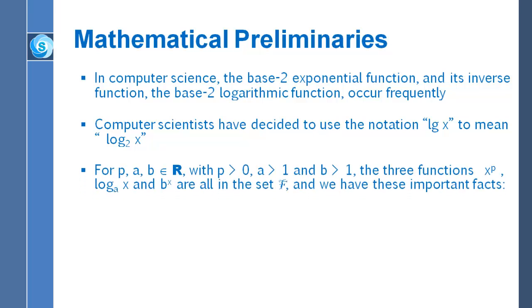Now, suppose you have real numbers P, A, and B, and P is positive, A is greater than 1, and B is greater than 1. Then, it makes sense to talk about and compare the following three functions. X to the Pth power, log to the base A of x, and B to the x power. All three of these functions are increasing, they all belong to the set script F, in fact. And here's some rather important facts about comparing these functions. Log to the base A of x is big O of x to the P. Log to the base A of x is big O of B to the x. X to the P is big O of B to the x.